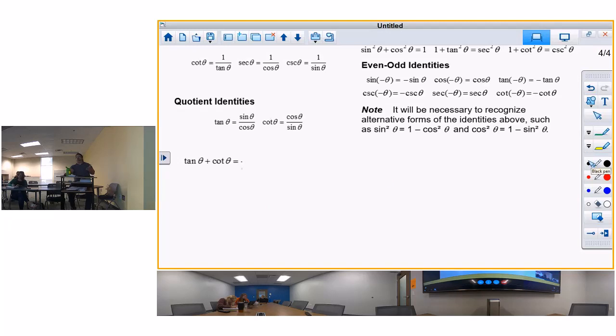So you're going to stick in those two identities, the quotient identities, and then you're going to use nothing but algebra.